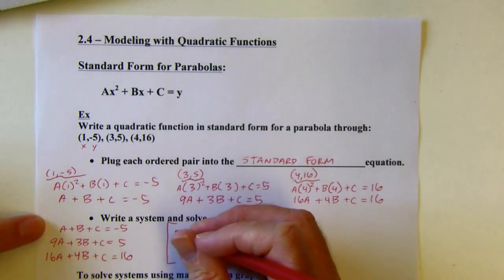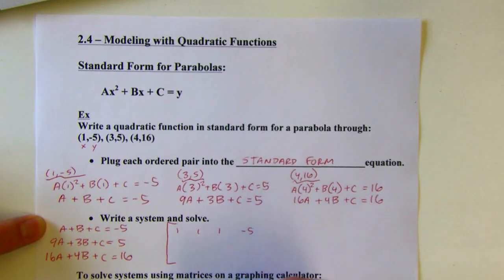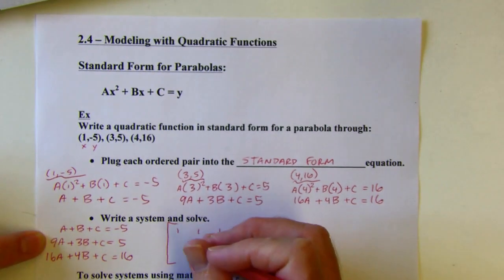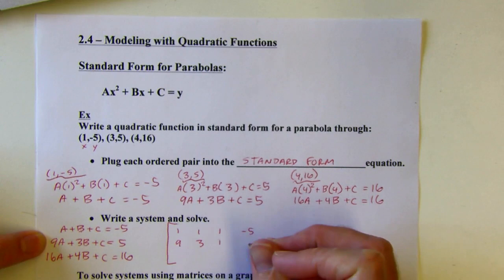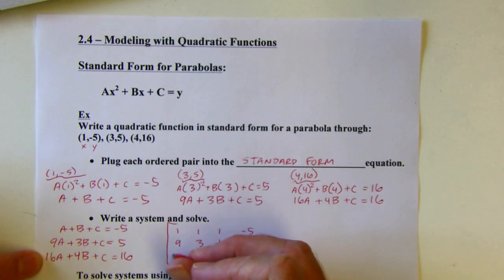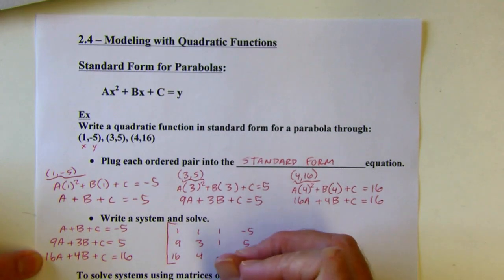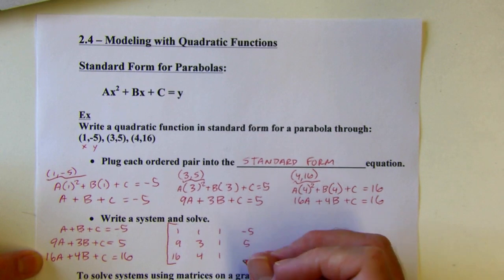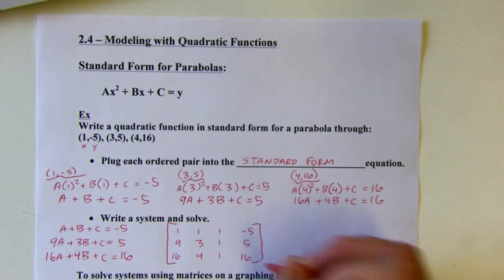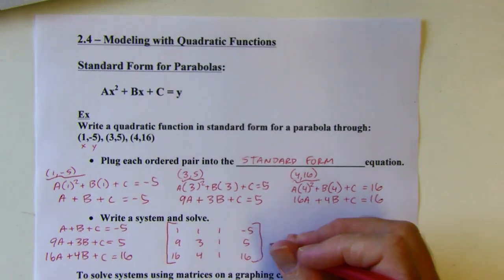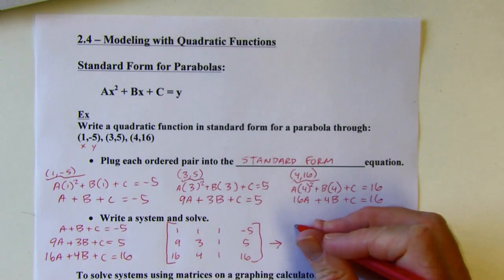The matrix of this system — I'm just going to take the coefficients: 1, 1, 1, negative 5. And then 9, 3, 1, positive 5. And 16, 4, 1, 16. Now what I'm going to have my calculator do is write this in reduced row echelon form.